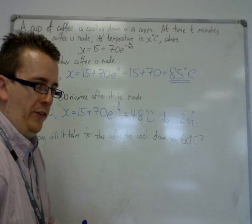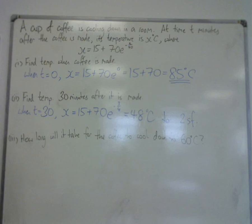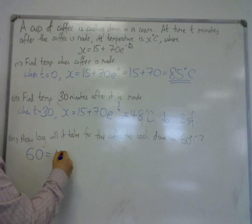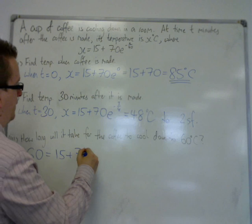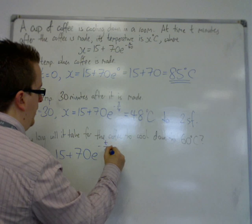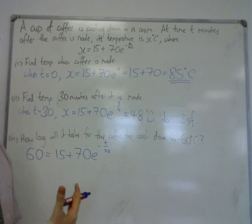How long will it take for the coffee to cool down to 60 degrees centigrade? In this case, we're told what the temperature is that we want to arrive at. We know that the temperature is equal to 15 plus 70 e to the minus t over 40. We need to rearrange the equation to get t, the time.